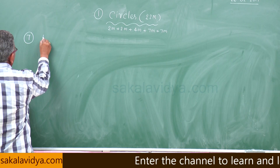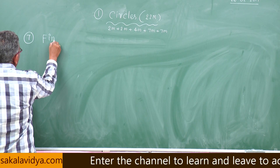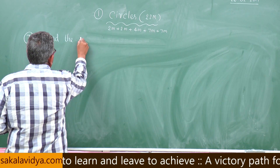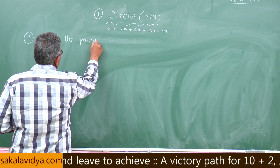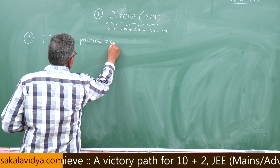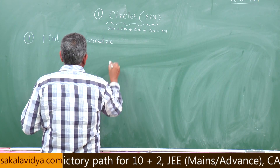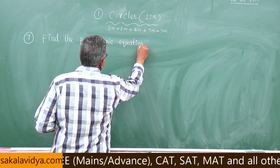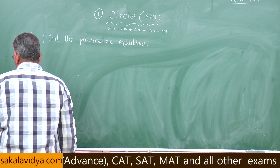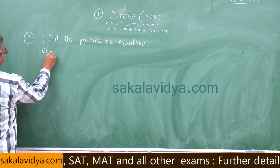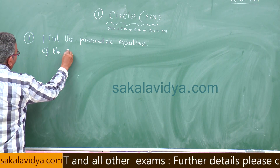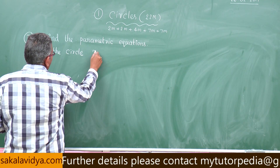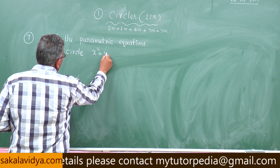Find the parametric equations of the circle x squared plus y squared is equal to 4.